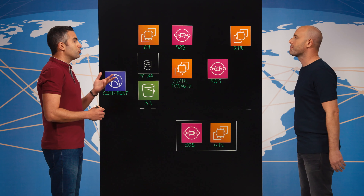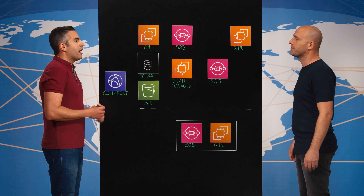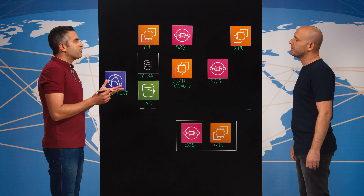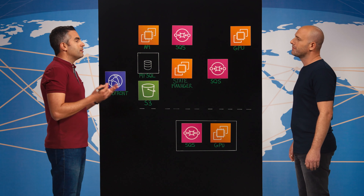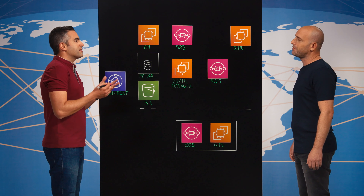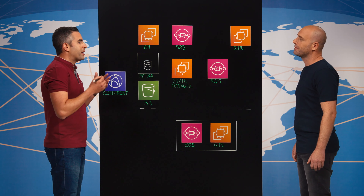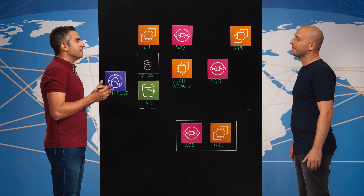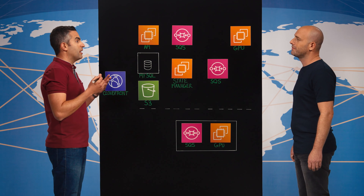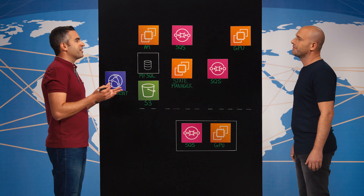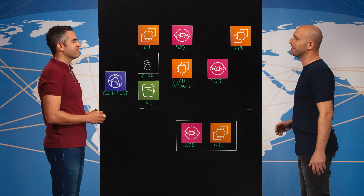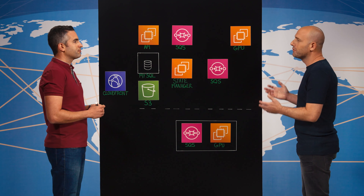Today we're going to talk about Deep Nostalgia, a feature that became an internet sensation immediately after we released it. You are asked to upload an image of your ancestors and you allow us to bring it back to life. We take the static face in a still image and we make it move, blink, and smile. This feature was so beautiful that it made millions around the world upload photos of their loved ones, and some of them to cry after seeing their beloved family members smile for the first time.